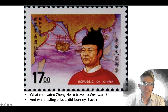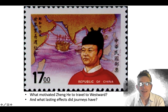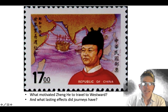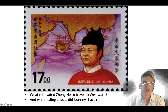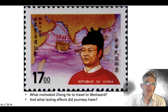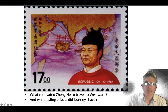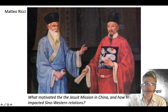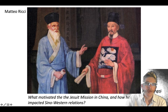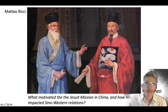Here you have Zheng He on a stamp. Those of you who have taken classes with me before know that I like to use stamps because they tell us so much about what is considered important to a country and society at a certain point in history. What were the lasting effects of his journey on Sino-Western relations? And we're also going to spend a lot of time on the Jesuit mission in China — with figures like Matteo Ricci and Xu Guangqi — and its impact on Sino-Western relations, really both ways.